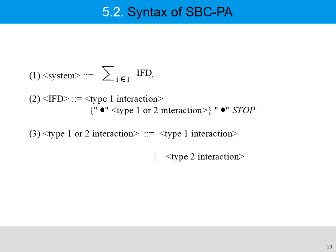We use three rules to describe the syntax of SBC process algebra. The first rule shows a system is a summation of many IFDs. The second rule shows an IFD is a process prefaced with a type 1 interaction and many type 1 or type 2 interactions. The third rule describes the type 1 or type 2 interaction as either a type 1 interaction or a type 2 interaction.